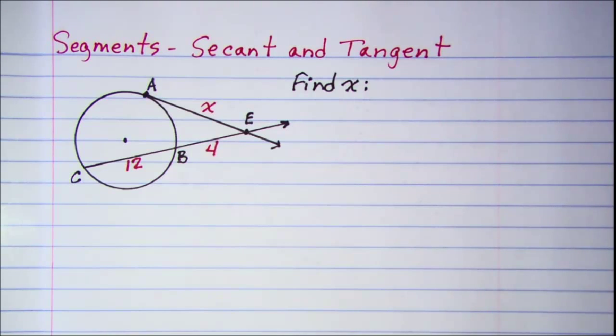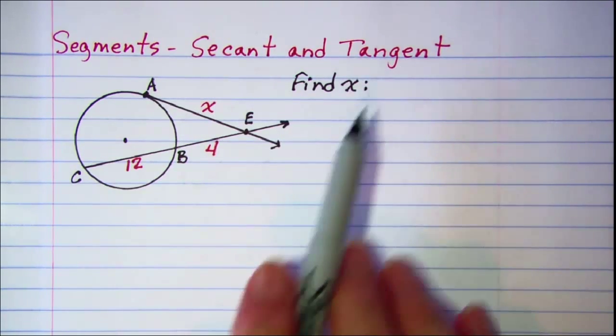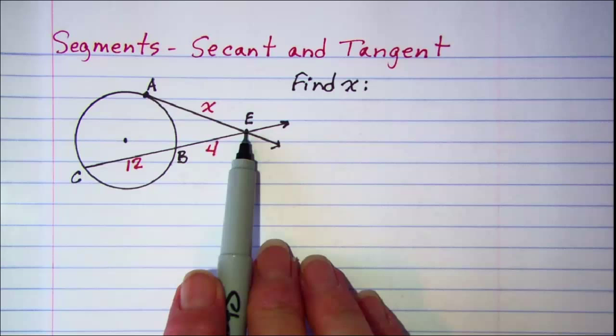In this video we'll be solving a problem involving the segments formed when a secant and a tangent intersect outside of a circle.